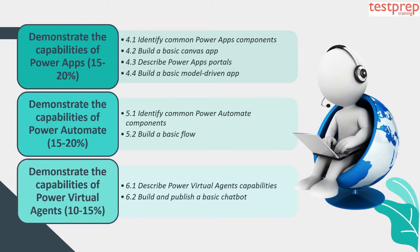Topic 6: Demonstrate the capabilities of Power Virtual Agents, which comprises 10 to 15 percent weightage in the exam. This includes: 1. Describe Power Virtual Agents capabilities; 2. Build and publish a basic chatbot.